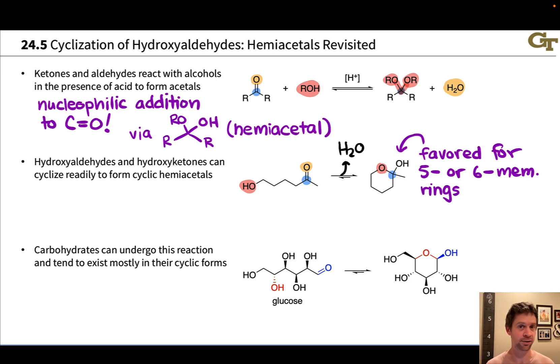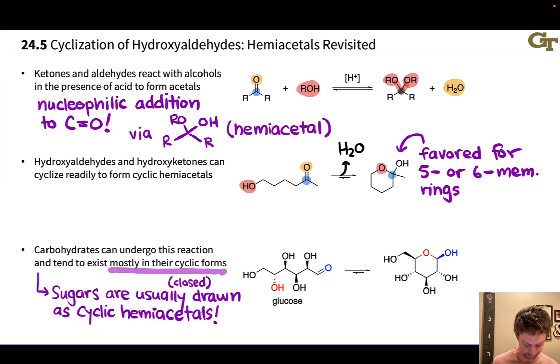As long as that ring size is right, five or six members, this can happen spontaneously. And carbohydrates are very frequently poised to do this kind of cyclization very easily. So most sugars actually exist in their closed or cyclic hemiacetal forms.